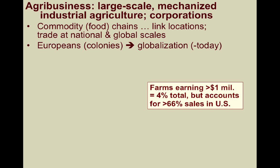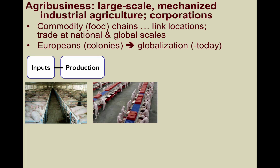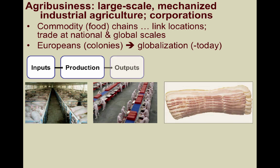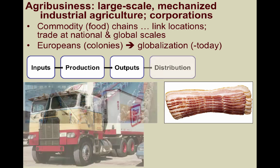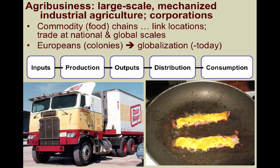Agribusiness is usually involved with the inputs of a commodity chain, such as pigs and hogs. They are also involved with the stages of production, the outputs or products that are produced. They are also often directly involved with distribution, and even with the product's consumption, for example, through advertising.